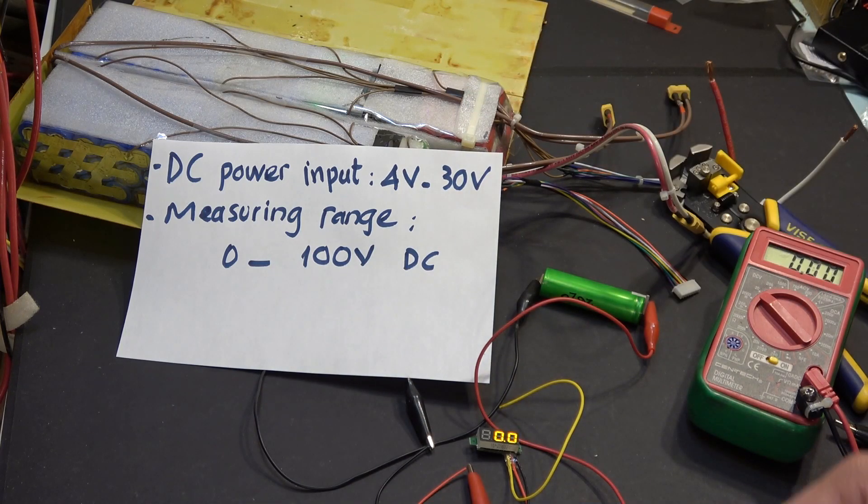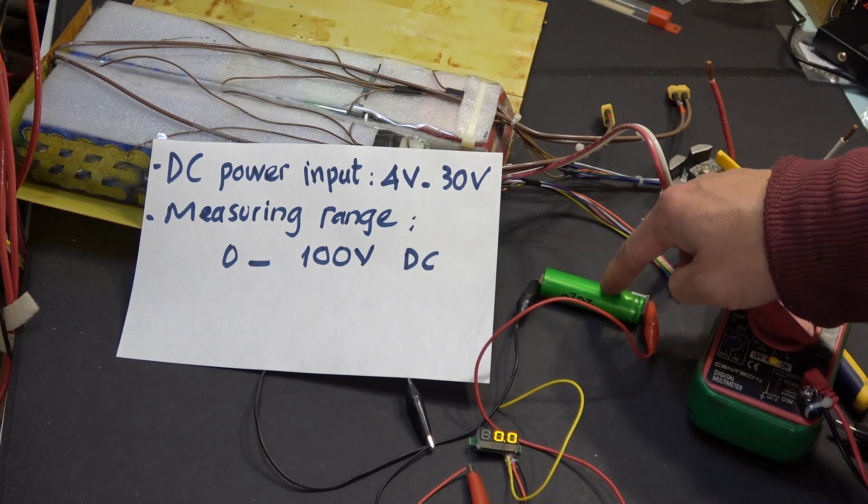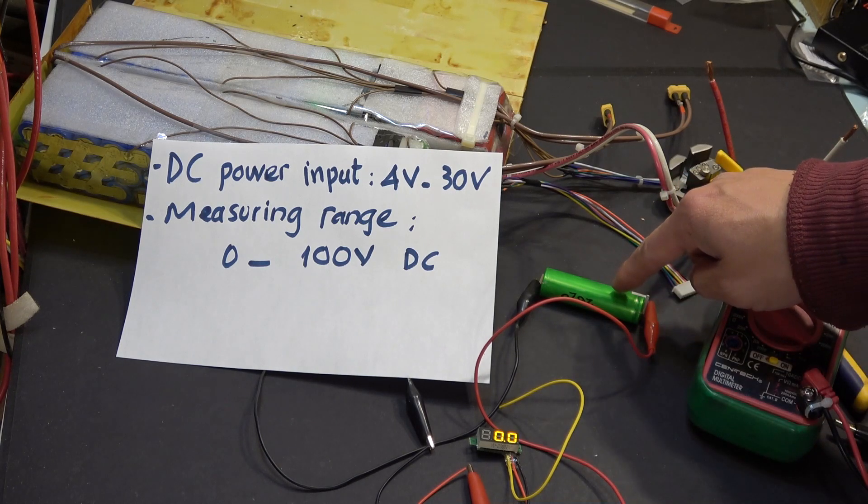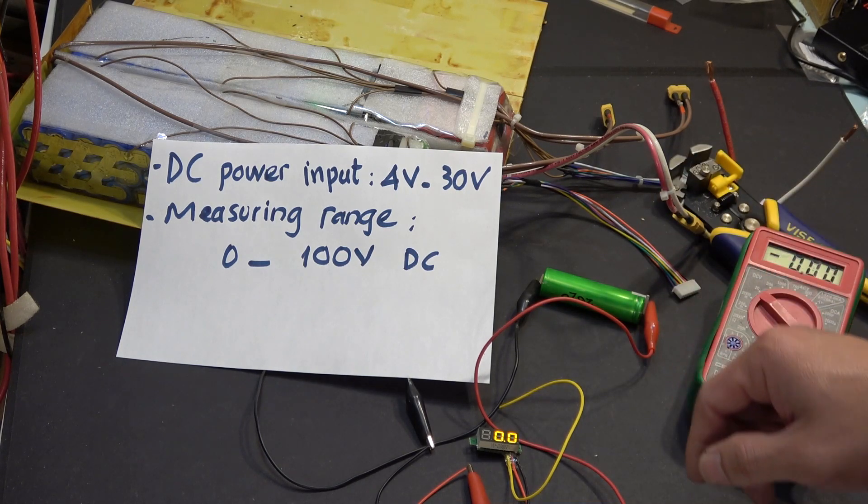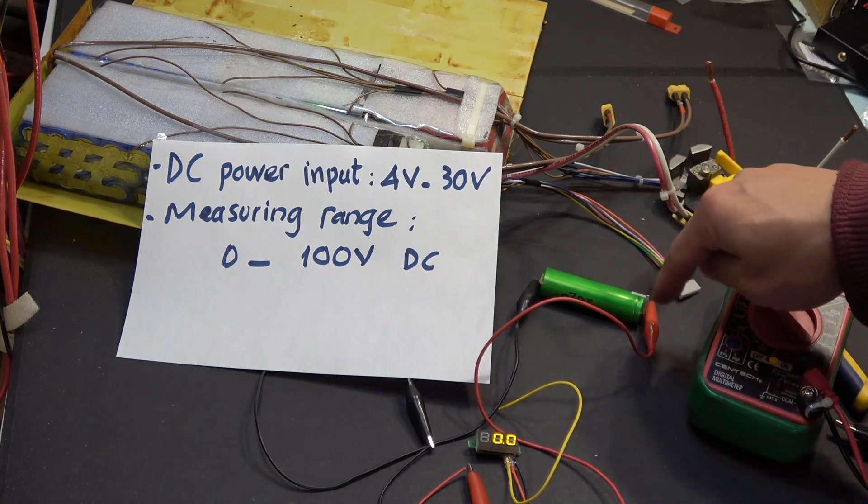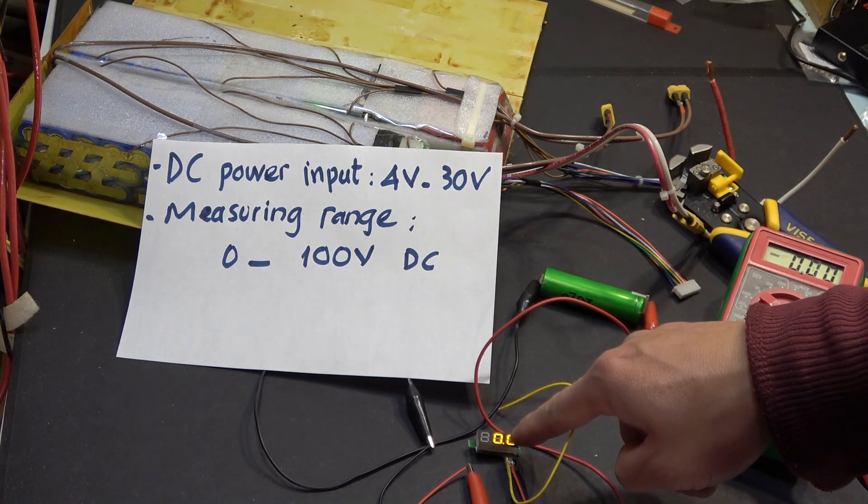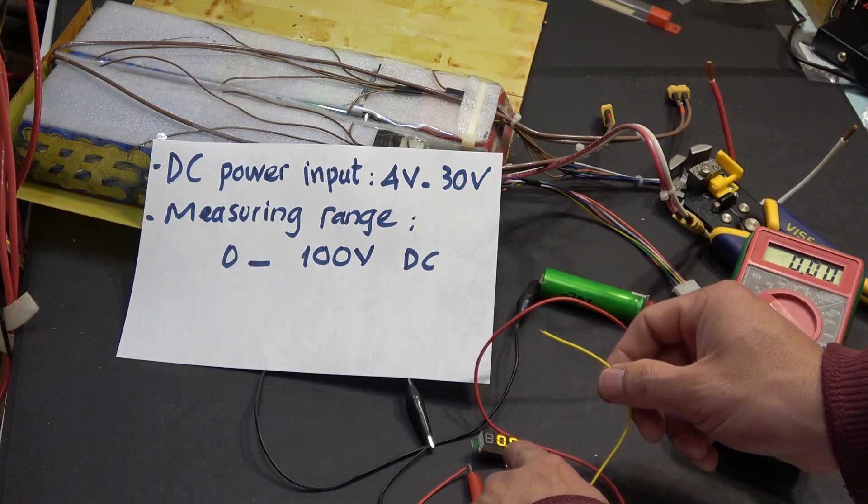So let's say that in this case I have this battery here I want to monitor and it's less than 30 volts. So the red and the black will power the unit. You see it's on right now.